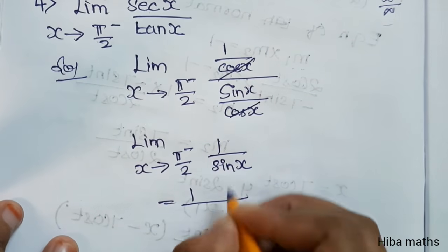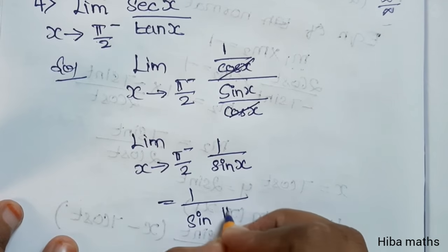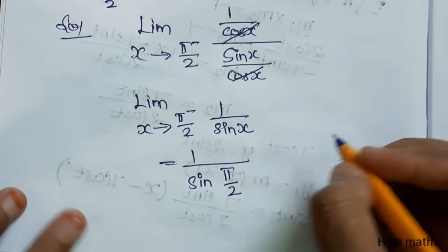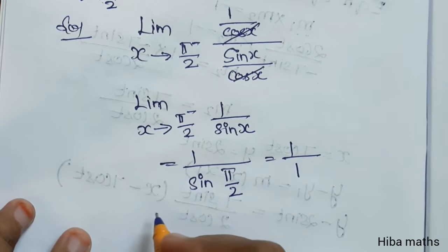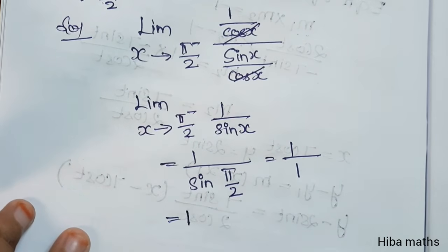This equals 1/sin x. Sin(π/2) is sin 90°, which equals 1. Therefore, the answer is 1.